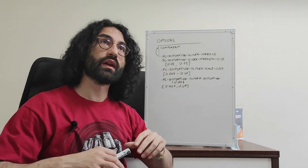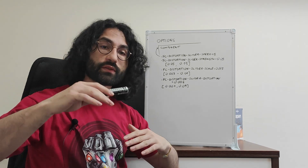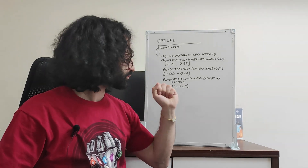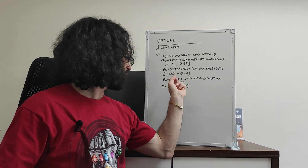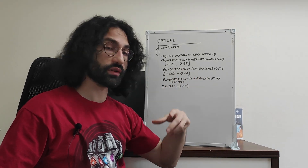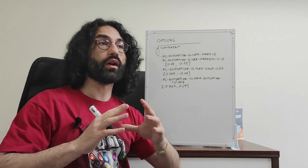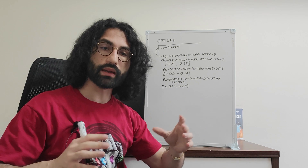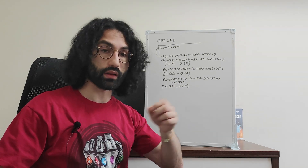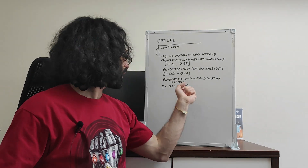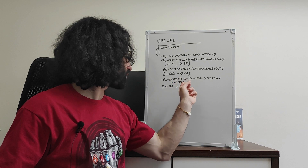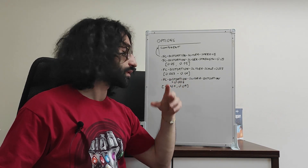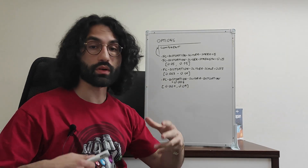The scale option is the scale transfer applied to the slides while dragging. And finally, we have the fc-distortion-slider-distortion option, which is kind of the horizontal distortion, the horizontal scale factor applied to all the images while dragging. Its default value is 0.006 and suggested values are between 0.001 and 0.04.